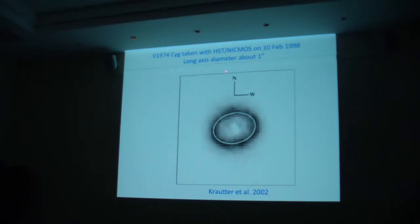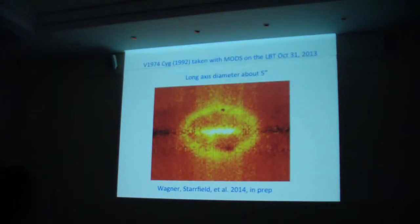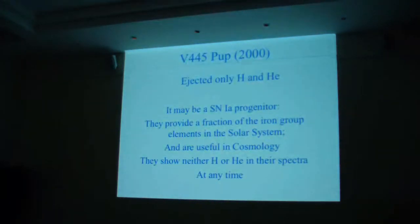This was taken with HST NICMOS a few years later. The previous image was less than an arc second. Now, in 1998, Joaquin Krautter et al. This is the long axis. Diameter is about a second of arc. And last week, with a large binocular telescope, this is the MODS detector. This is a spectrogram, and there it is. And it's about five seconds of arc.